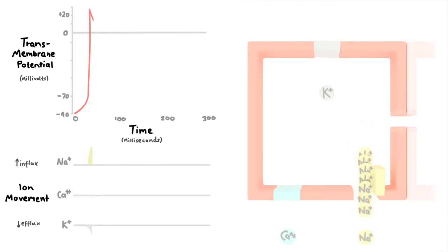They have been open long enough, however, to manifest a change in the TMP from negative 70 to positive 20. This change from negative to positive is called depolarisation.